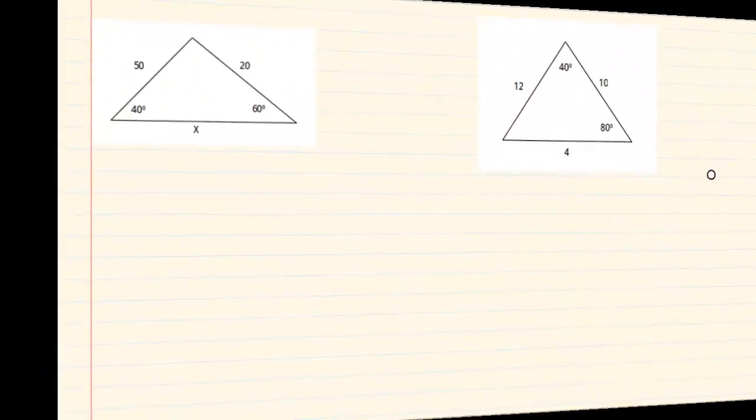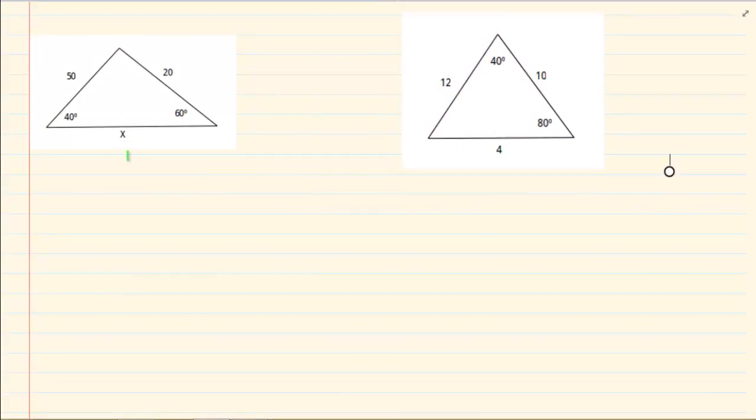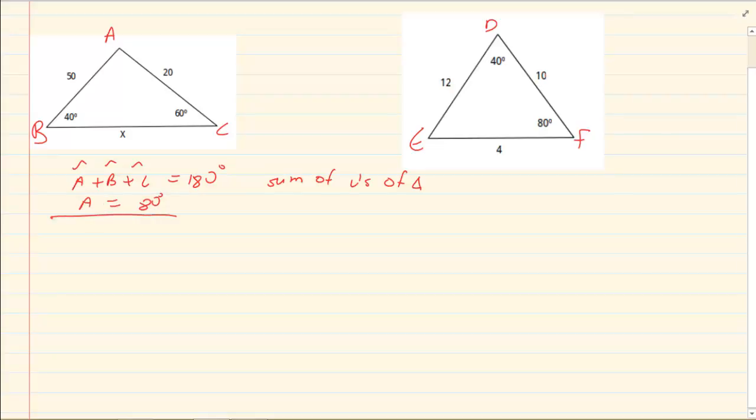Let us look at the next one. Let us take the following example. What they want us to do is solve for X. If we are doing sum of angles of a triangle, we know that angle A plus angle B plus angle C is going to equal to 180 degrees. We know that angle D plus angle E plus angle F is going to equal to 180 degrees. Again, sum of angles of a triangle.